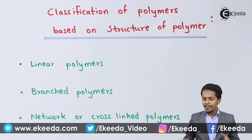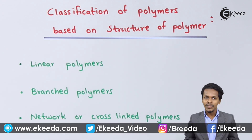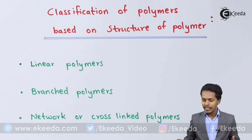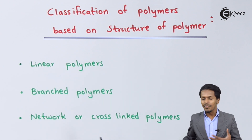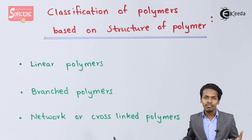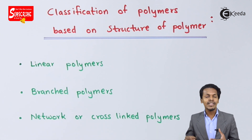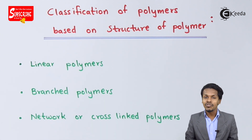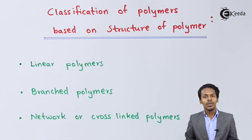In this topic, let me talk about the classification of polymers based on structure. For that we have three points: linear polymers, branch polymers, and network or cross-linked polymers. These are the three classifications based on the structure of polymer. Now let me talk about the first one — linear polymers.